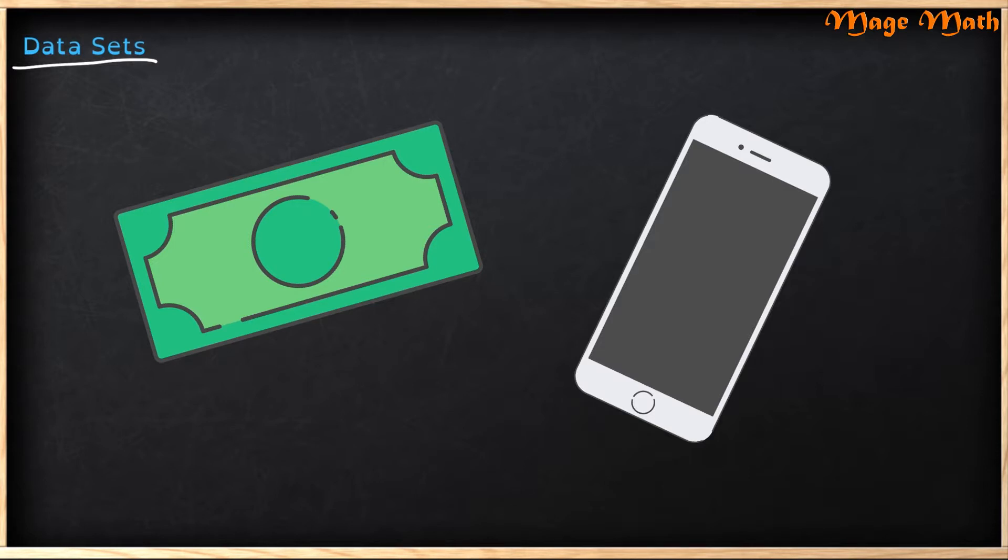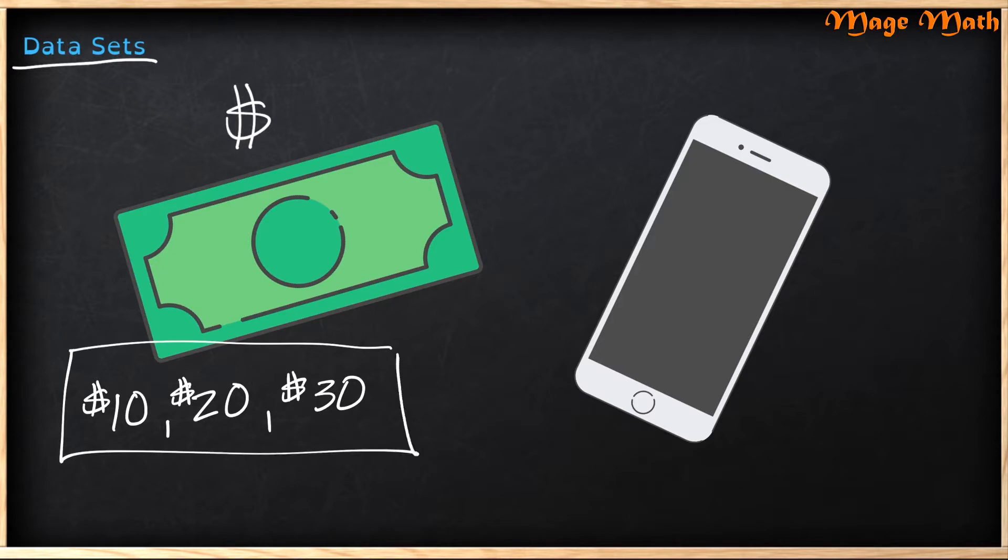The first one is dealing with money. An everyday example that you might see is when you look at your allowance. So maybe I get $10 a week from my mom, but maybe my friend gets $20 a week, and another friend gets $30 a week from his dad. This right here is a data set. It's just a collection of numbers as they relate to a particular subject. In this case, these numbers relate to money or getting paid an allowance.